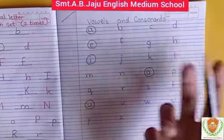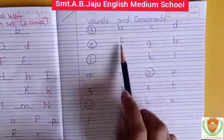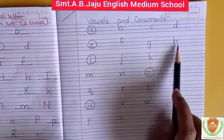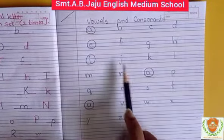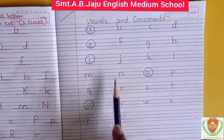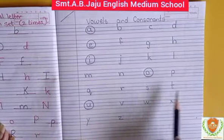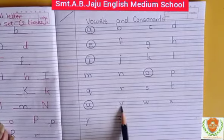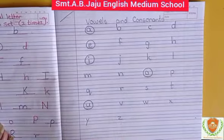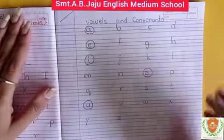Now, what are the consonants? What is the meaning of consonants? The remaining letters are consonants: B, C, D, F, G, H, J, K, L, M, N, P, Q, R, S, T, V, W, X, Y, Z. These are the consonants.